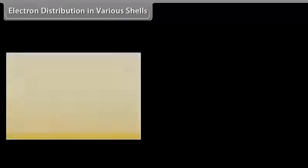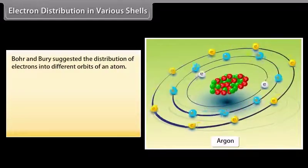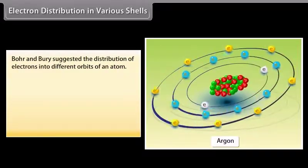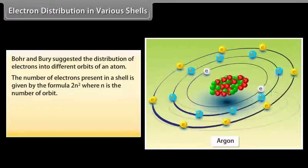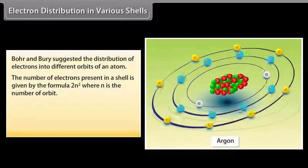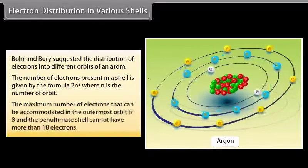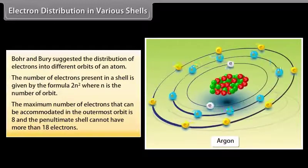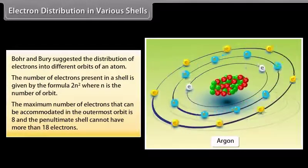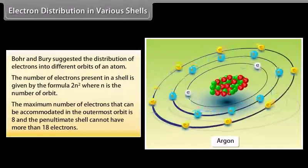Bohr and Bury suggested the distribution of electrons into different orbits of an atom. The number of electrons present in a shell is given by the formula 2N², where N is the number of the orbit. The maximum number of electrons that can be accommodated in the outermost orbit is 8, and the penultimate shell cannot have more than 18 electrons.